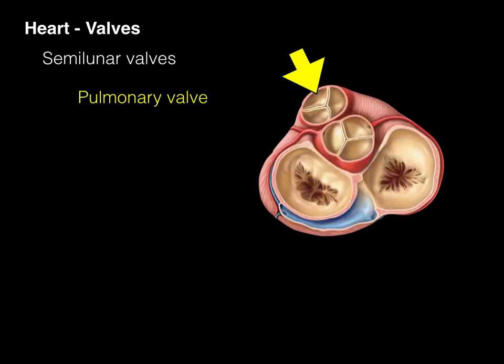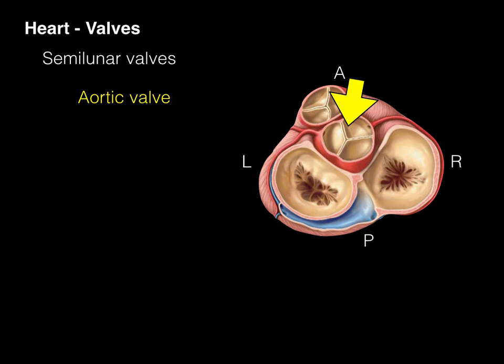The pulmonary valve is more anterior in contrast to the aortic valve, which is more posterior. Another way to remember this in an axial section, the pulmonary valve is more anterior, aortic valve is more posterior. But also, take a look at this. Only on the aortic valve, we have the right coronary artery coming off the right cusp, and then the left coronary artery coming off the left cusp. That's another way of telling the aortic valve from the pulmonary valve.